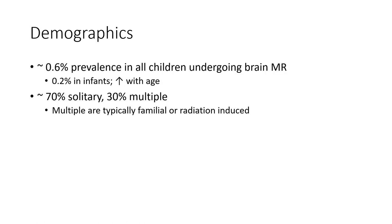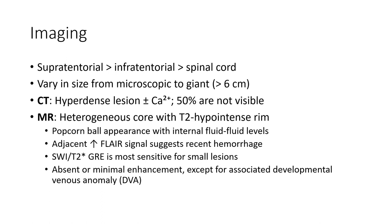Demographically, around 0.6% prevalence in children undergoing brain MRI, 0.2% in infants, and prevalence increases with age. Around 70% are solitary, 30% multiple. Multiple lesions are typically familial or radiation-induced. Supratentorial more common than infratentorial and spinal cord.